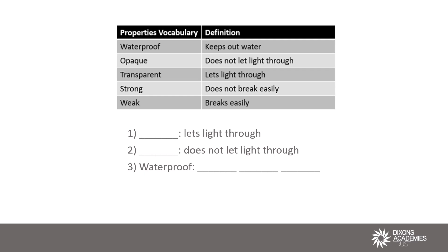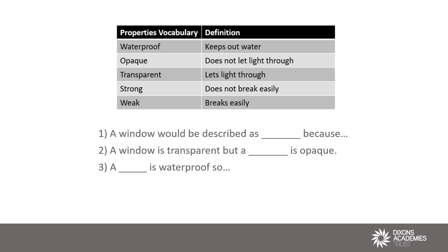The because-but-so technique used in the Writing Revolution is one way we've adapted this in some of our schools. Look at these items on a knowledge organiser. A typical retrieval task might begin with the definitions and ask pupils to recall the term. With a tiny change, we prompt deeper thinking: 'A window would be described as blank because...' 'A window is transparent, but a blank is opaque.' 'A blank is waterproof, so...' These are still retrieval, but the small adjustment allows for deeper thinking — retrieve and.